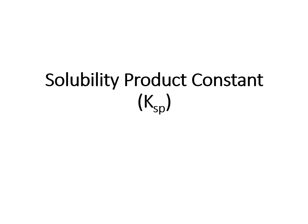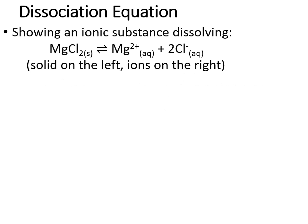The solubility product constant, also known as Ksp. For our dissociation equations, we're going to stick to writing the solid on the left-hand side of the equation and the ions on the right. We're dissociating a solid into its ions — as they dissolve they become aqueous. We write the solid on the left and the ions on the right so that when we write our equilibrium expression, we don't end up with fractions.